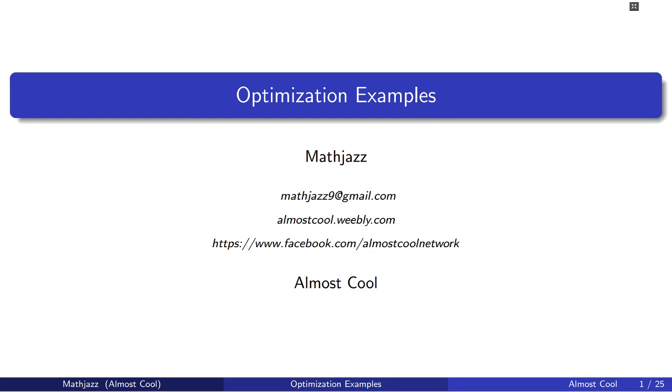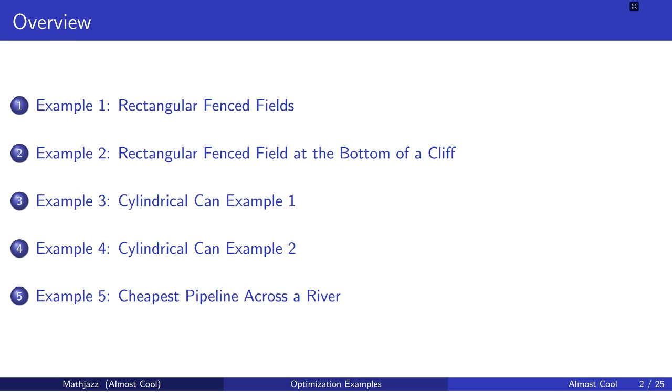Hello, this is Math Jazz from Almost Cool. This is our fifth video in our series of common optimization problem examples. Today, we're going to find the cheapest pipeline across a river.